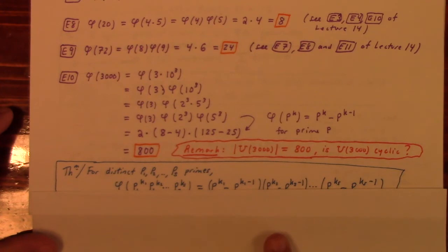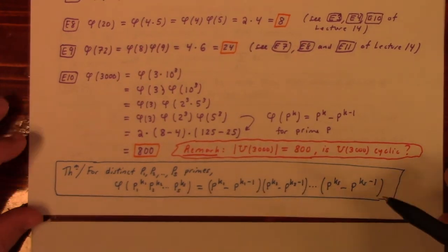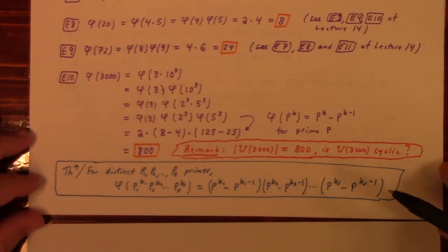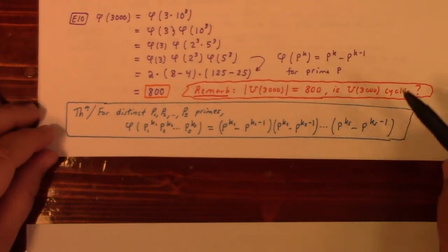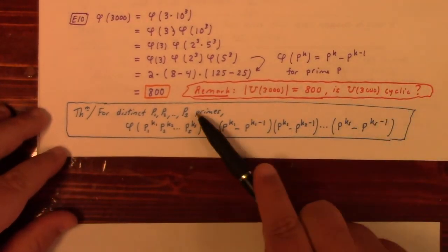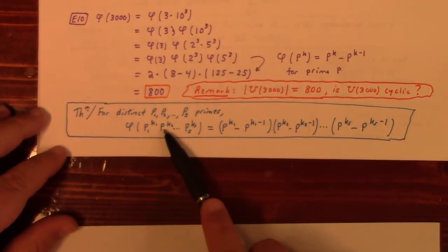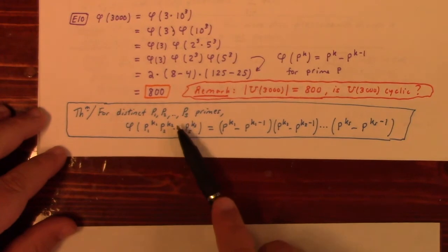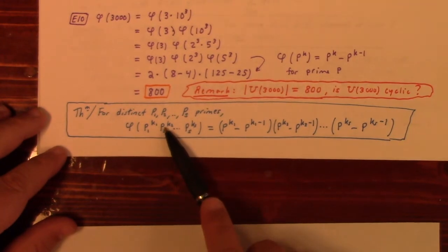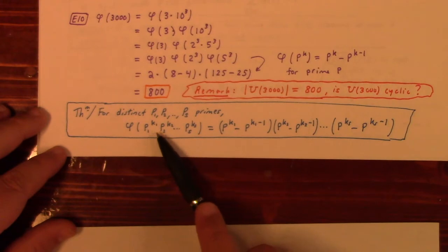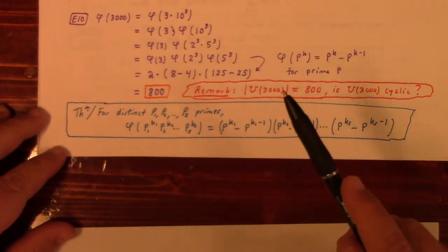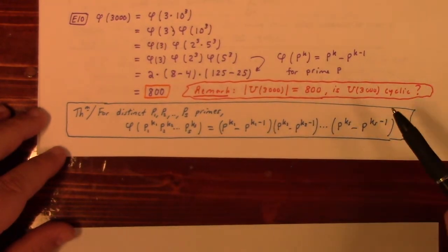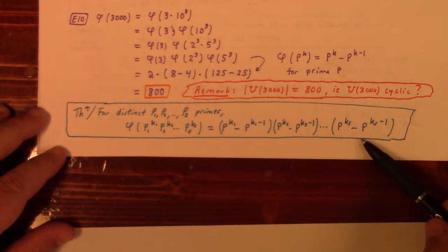On the basis of these theorems, for distinct primes p_1 through p_s with prime powers p_i^{k_i}: since these prime powers are coprime, we can repeatedly apply the multiplicative property to get φ(p_1^{k_1} · p_2^{k_2} · ... · p_s^{k_s}) = φ(p_1^{k_1}) · φ(p_2^{k_2}) · ... · φ(p_s^{k_s}).